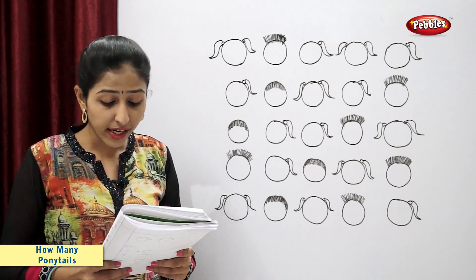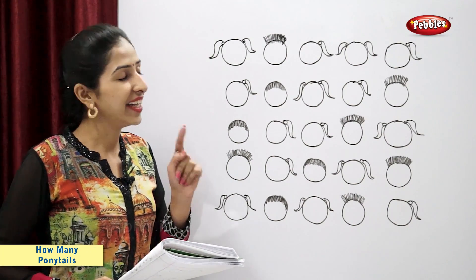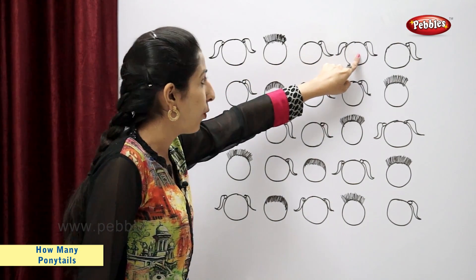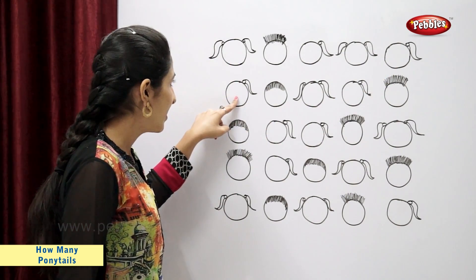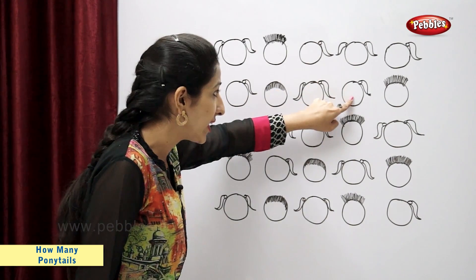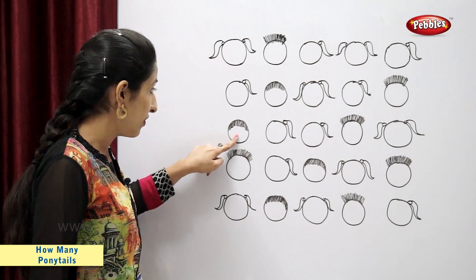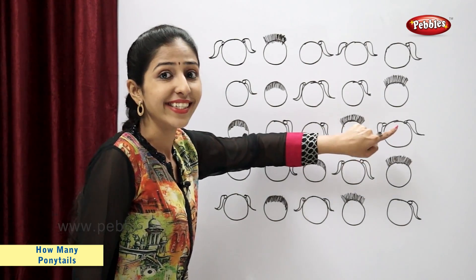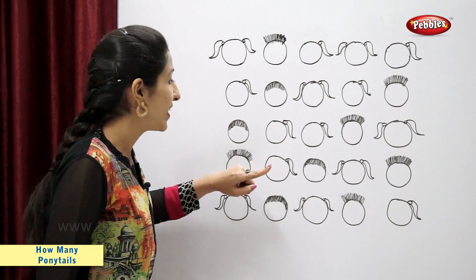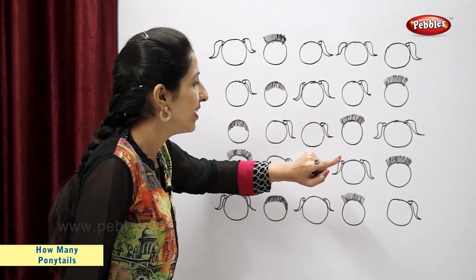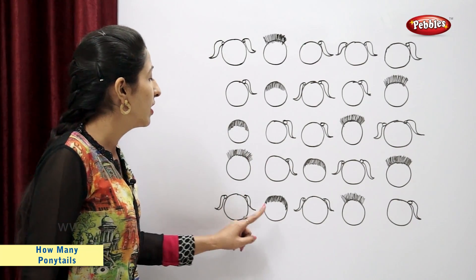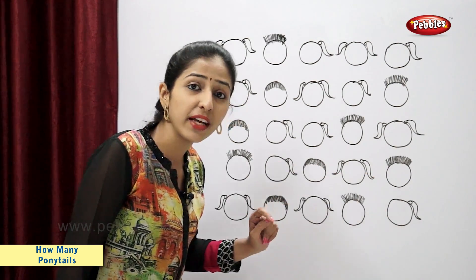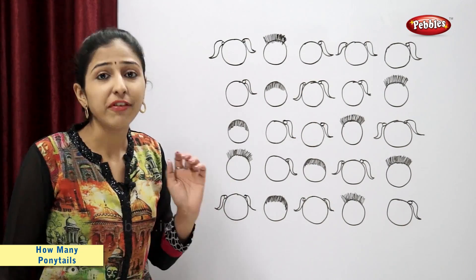Now tell me students, there are how many children in the class? Let's count: one, two, three, four, five, six, seven, eight, nine, ten, eleven, twelve, thirteen, fourteen, fifteen, sixteen, seventeen, eighteen, nineteen, twenty, twenty-two, twenty-three, twenty-four, and twenty-five. So there are total twenty-five students in the class.